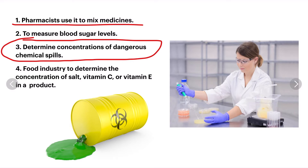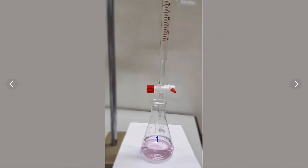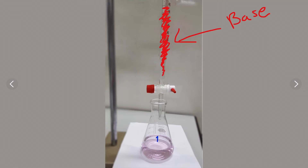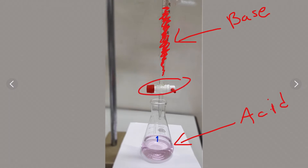The setup for a titration — at least when ordering labs through ASIM — has a burette up top filled with some substance. Typically you'll see a base in this burette, filled up with a base, and down here typically you'll have an acid. It's a very common way to do a titration. You've got a valve to adjust how much of this base you want to allow to drip into your acidic solution.